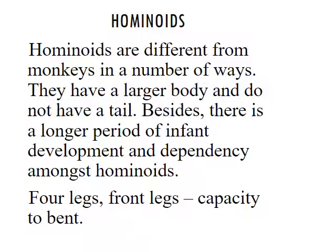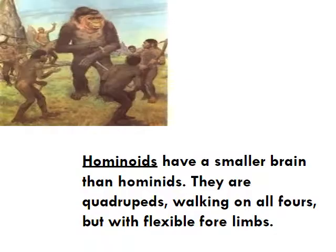Hominoids are different from monkeys in a number of ways — they have a larger body and do not have a tail. There is a long period of infant development and dependency among hominoids, with capacity to bend their front legs. Hominoids also take care of their young for a longer period of time. Hominoids have a smaller brain than hominids; they are quadrupeds — walking on all fours — but with flexible forelimbs they can use for other activities.